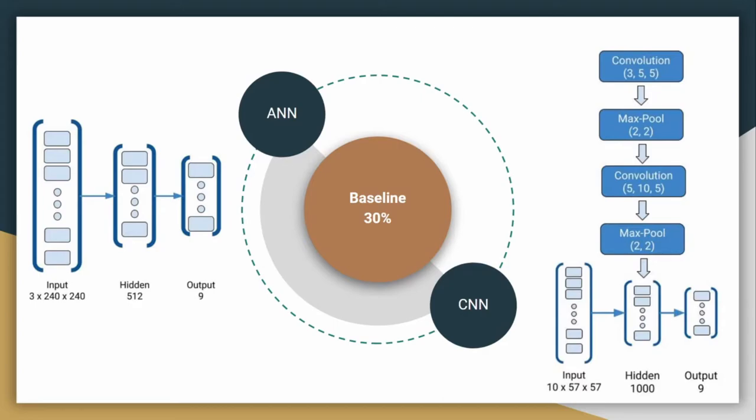The ANN is a simple, fully connected model with a single hidden layer of 512 neurons. And the CNN is also a simple model with two convolutional and max pool layers, connecting to another FC layer with 1000 neurons in the hidden layer.